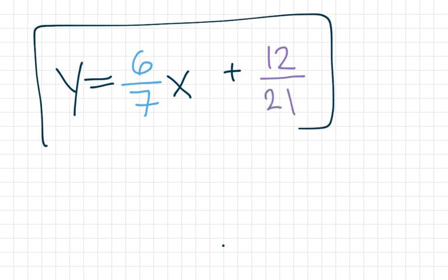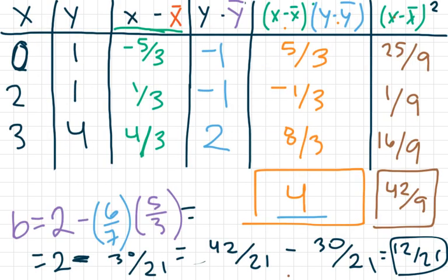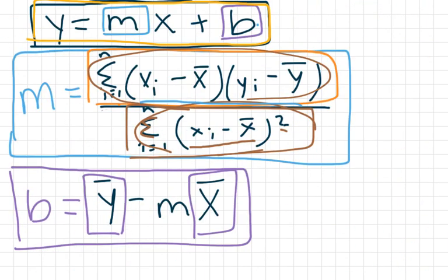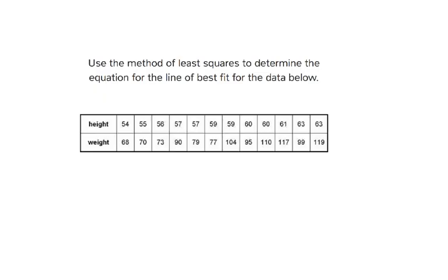So this is our line of best fit: y equals six sevenths x plus twelve over twenty-one. That is the line of best fit found using the formula for m and the formula for b. Now we can do the same thing on the original problem to find the line of best fit for the height and weight data. It will take a little more time because we have more numbers, but it's the same exact formula.